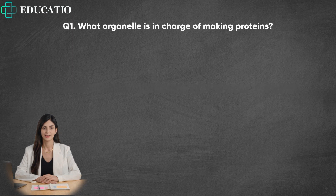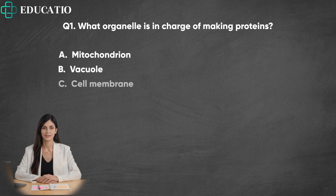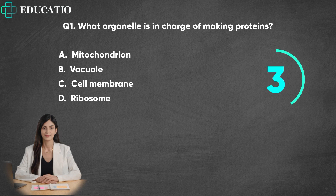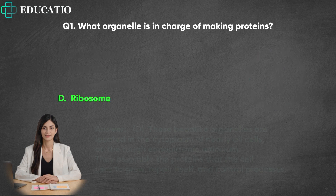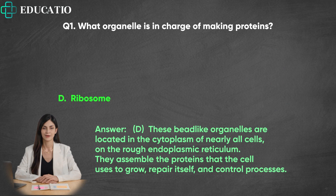Question 1. What organelle is in charge of making proteins? A. Mitochondrion. B. Vacuole. C. Cell membrane. D. Ribosome. Answer: D. These bead-like organelles are located in the cytoplasm of nearly all cells on the rough endoplasmic reticulum. They assemble the proteins that the cell uses to grow, repair itself, and control processes.